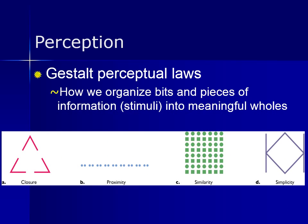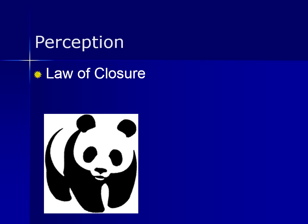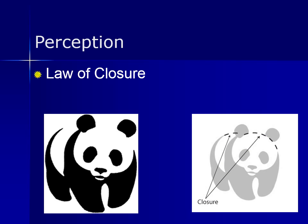There are a number of perceptual laws, but the main ones we'll be looking at are closure, proximity, similarity, and simplicity. Let's begin with the law of closure. You might be familiar with this picture — but did it occur to you that your mind was supplying extra information without you even being aware of it? This is an example of our tendency to supply missing information or elements to close or complete a picture that might be familiar to us, or even unfamiliar to us.